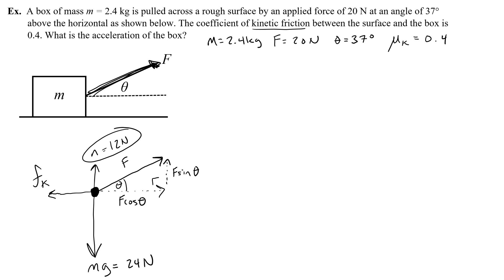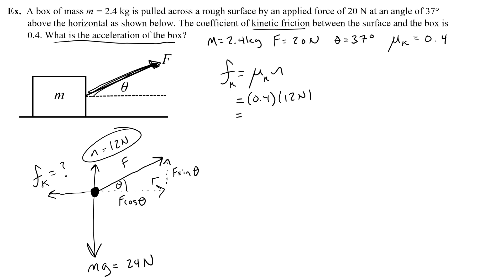Now that we know the normal force is 12 newtons, why do we care? Because the problem asks for the acceleration, and we can't find it without knowing friction. Friction equals mu times the normal force — kinetic friction in this case. So friction equals 0.4 times 12 newtons, which gives 4.8 newtons. That's the force of friction: 4.8 newtons. I'll label that on the free body diagram.